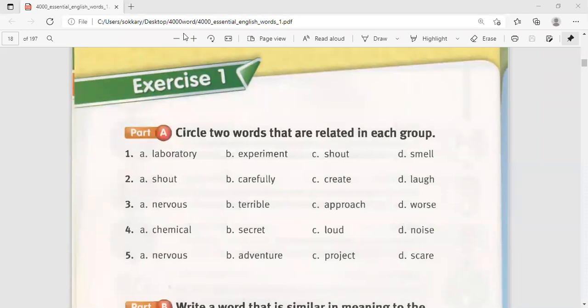Let's move to another words and another student. Malik Khaled, please read the group number three. Nervous, terrible, approach, worse. Nervous means angry. Terrible means very bad. Approach means you come near something. Worse means very bad. So we are here with terrible and worse. Good for you. They are the related words. This means very bad. Thank you very much.